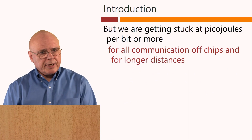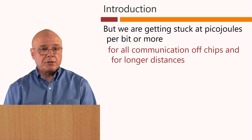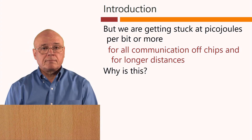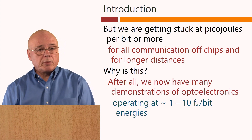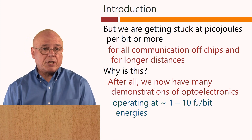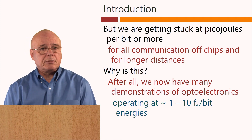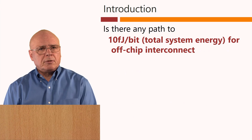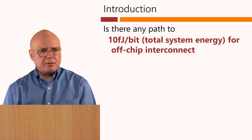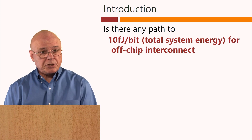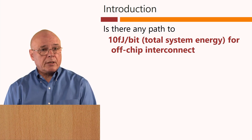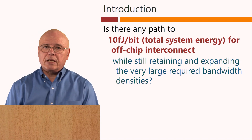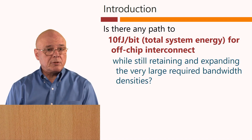The scarce resource inside large machines is becoming energy, and that's mostly used for sending information — especially for the large number of short-distance communications inside racks, boards, and even chips themselves. The problem is we're getting stuck at picojoules per bit or more for all communications off-chip and for longer distances. Is there any path then to 10 femtojoules per bit of total system energy for off-chip interconnect, while still retaining and expanding the very large required bandwidth densities?